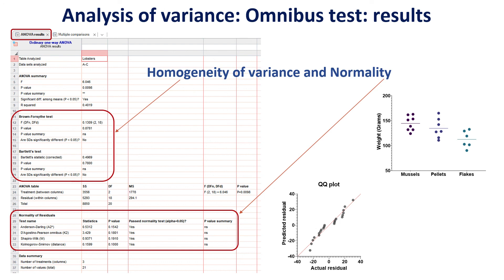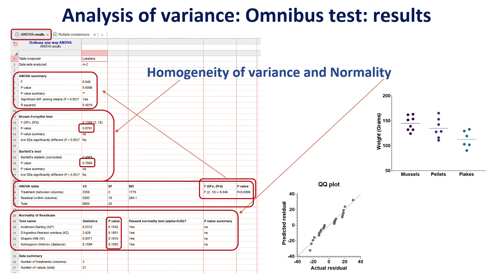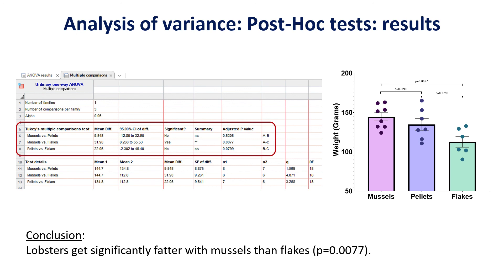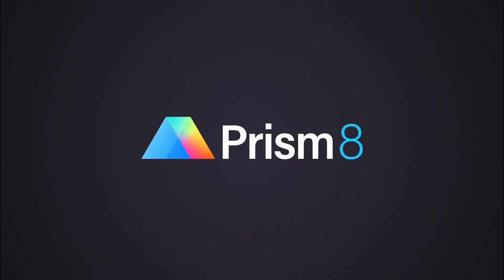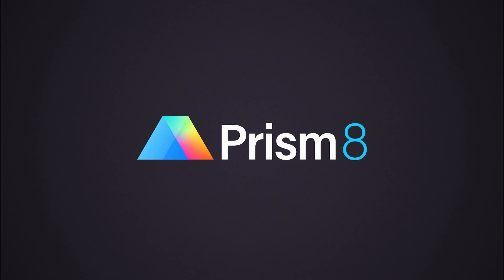The p-values for all the assumption tests are not significant, meaning there is no significant departure from normality, nor a significant difference in variability between the three groups — which is what we want. The ANOVA table shows sum of squares, degrees of freedom, mean squares, and the F-ratio and p-value reported at the top. For the pairwise comparisons I went with Tukey, and we can see that lobsters get significantly fatter on mussels and flakes — or is it that they eat more because they prefer them? They seem to do okay with pellets too. Thank you for listening, and don't forget — stats don't have to be scary!